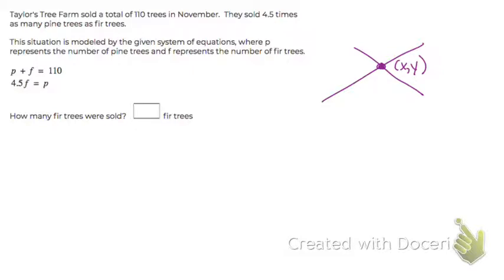Then we're going to enter this into our graphing calculator. Let's change all the P's to X. It's very important that you write down what X represents. Then let's change the F's to Y. Now let's look at the question. It says, how many fir trees were sold? Fir trees, remember, is our Y, so this is really asking what is Y?